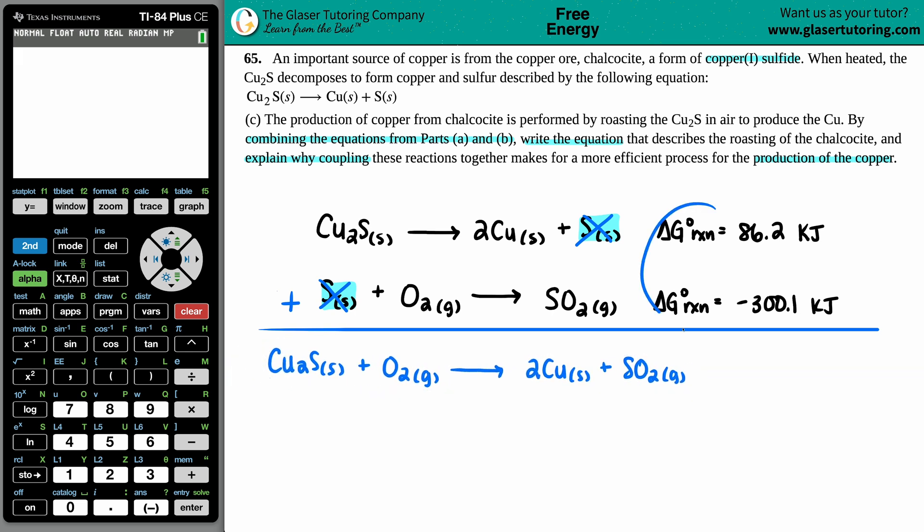We have 2Cu solid plus SO₂ gas. Now when we do this, we have to take our delta G's into account. We have to add the delta G's: 86.2 plus negative 300.1. Our resulting delta G standard for the whole entire reaction, for the coupled reaction, is 86.2 plus negative 300.1, and I get negative 213.9 kilojoules.